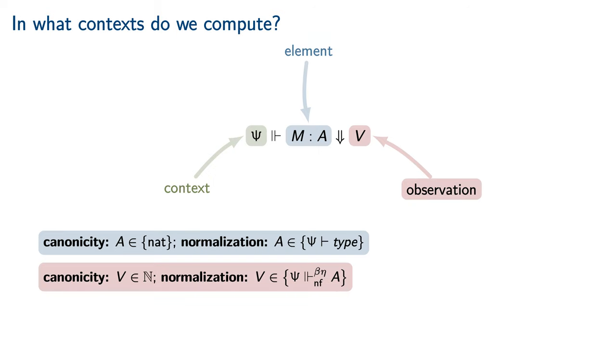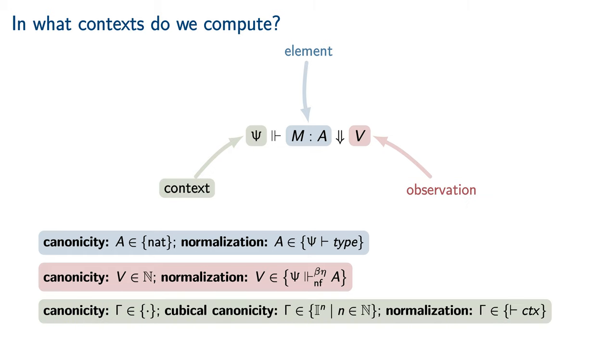when proving normalization, we must consider elements of arbitrary type. Likewise, a canonicity result observes the numeral that a particular element of the natural numbers type computes to, whereas a normalization result must observe the full beta-iter normal form of an arbitrary element. Canonicity results compute only in restricted contexts, such as the empty context only for closed canonicity, or contexts that are powers of the interval for cubical canonicity. On the other hand, a normalization result must compute in arbitrary contexts.